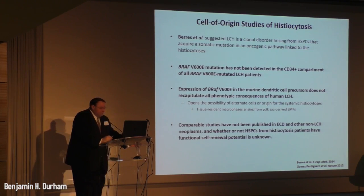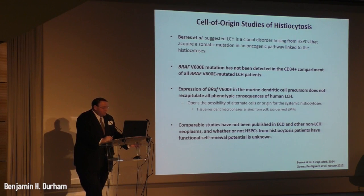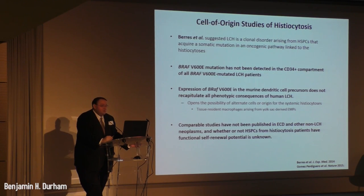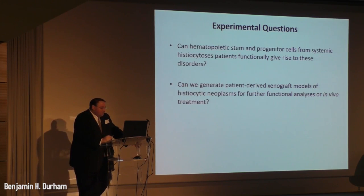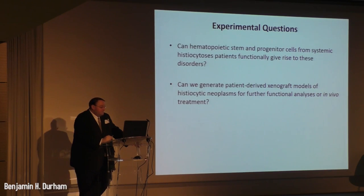A key component we've focused on is that comparable studies have never been published in Erdheim-Chester disease and other non-LCH neoplasms, and whether hematopoietic stem and progenitor cells from histiocytosis patients actually have functional self-renewal potential has not been described. So we asked two questions: Can hematopoietic stem and progenitor cells from systemic histiocytosis patients functionally give rise to these disorders? And can we generate patient-derived xenograft models for further functional analysis or in vivo treatment?